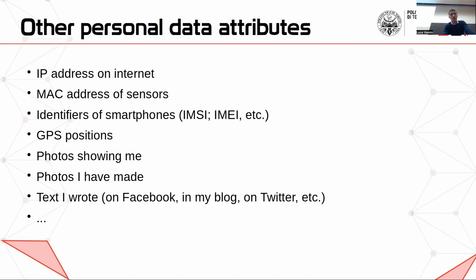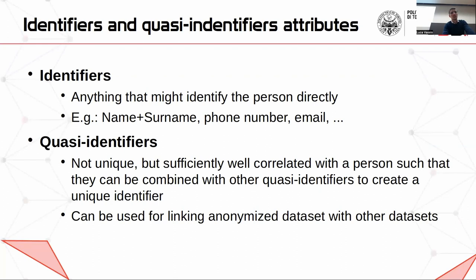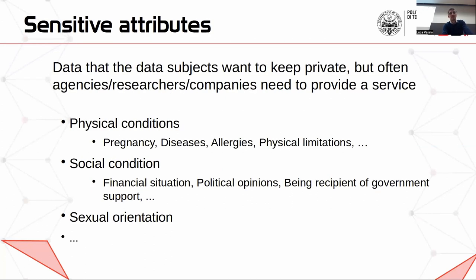You split these features into identifiers — those features that directly identify a person. You also have quasi-identifiers — features that taken by themselves are not enough to identify you, but if correlated with other features, can in theory be used to link a row with a specific user. Finally, you have sensitive attributes — those features that you don't want to be linked with a certain specific person, such as physical condition, social condition, or sexual orientation. These are a bit arbitrary; for example, your date of birth might be sensitive for some people but not others.